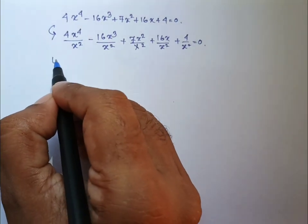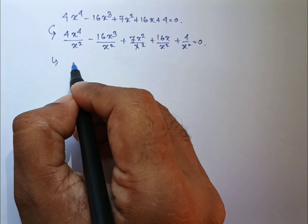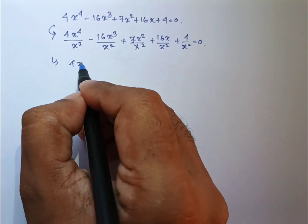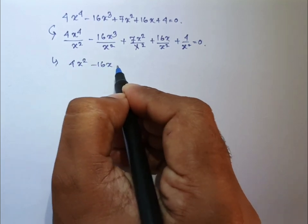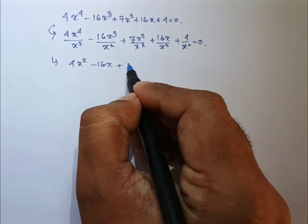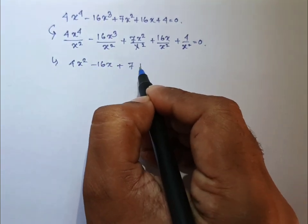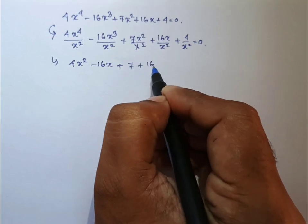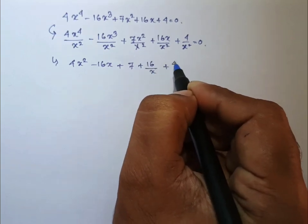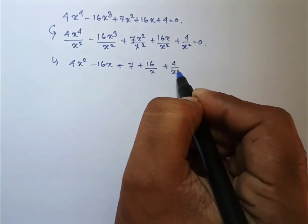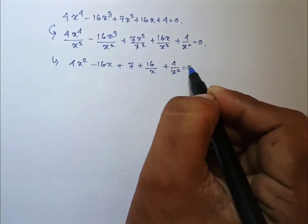Then the next step: 4x square minus 16x plus 7 plus 16 by x plus 4 by x square will be 0.